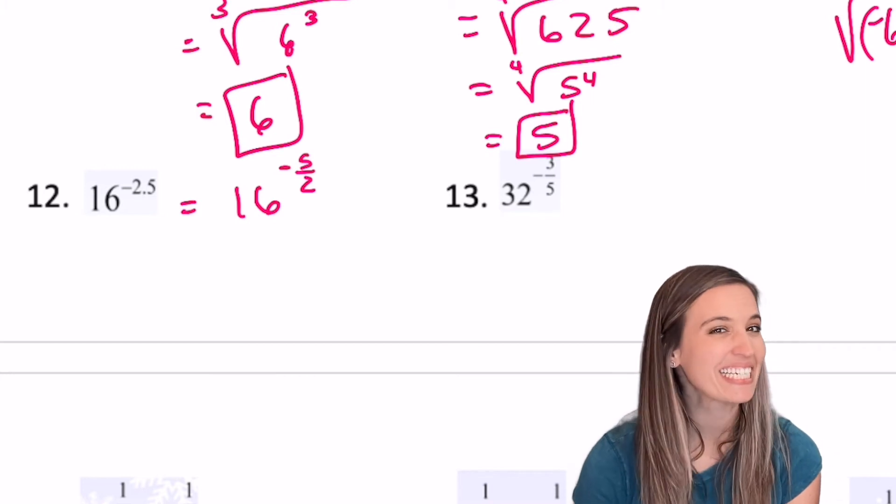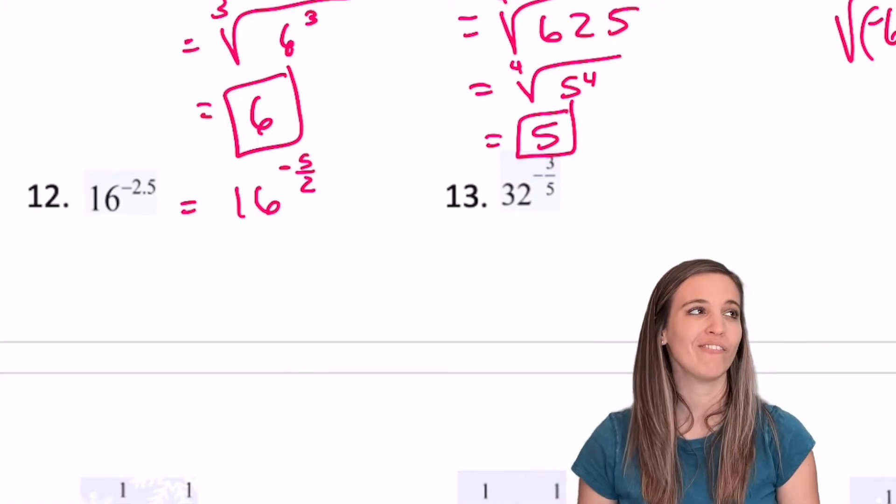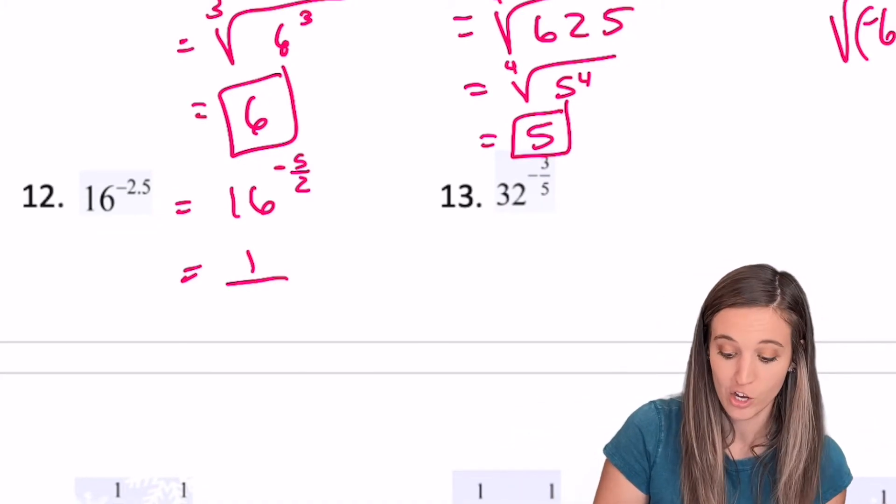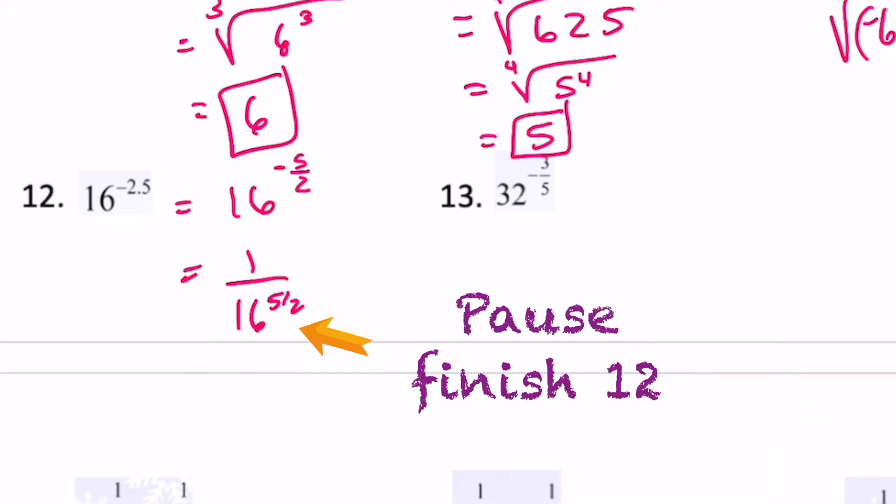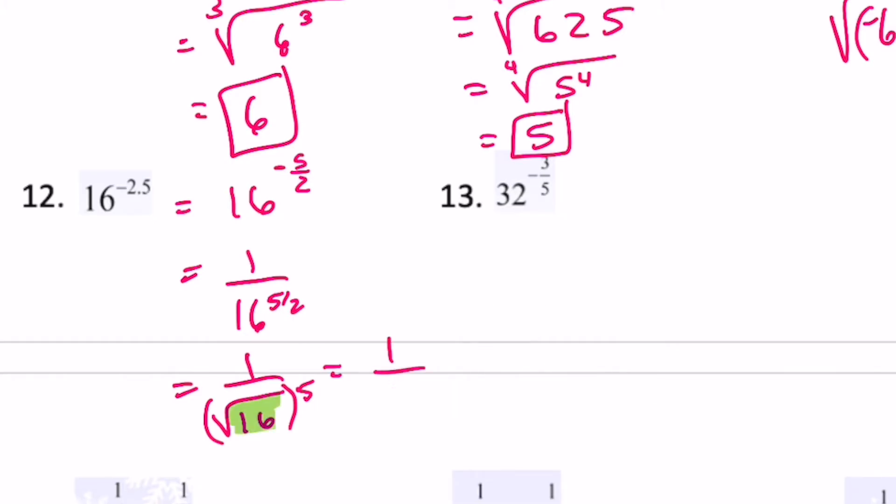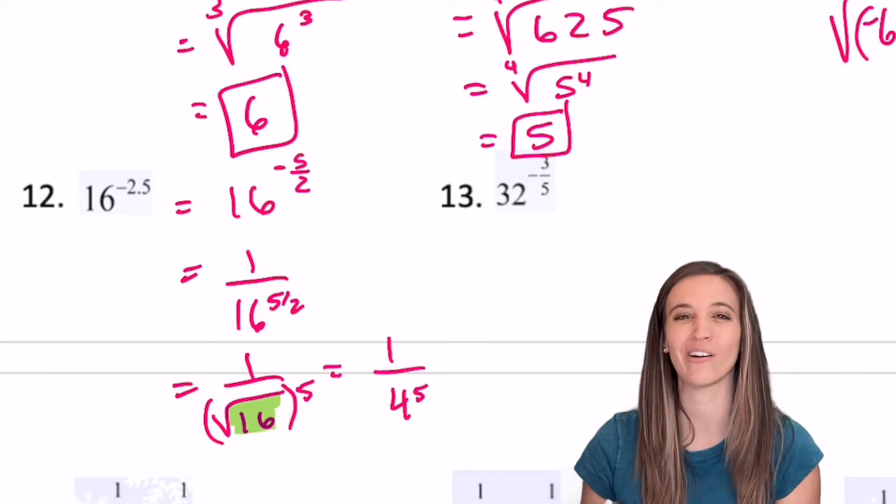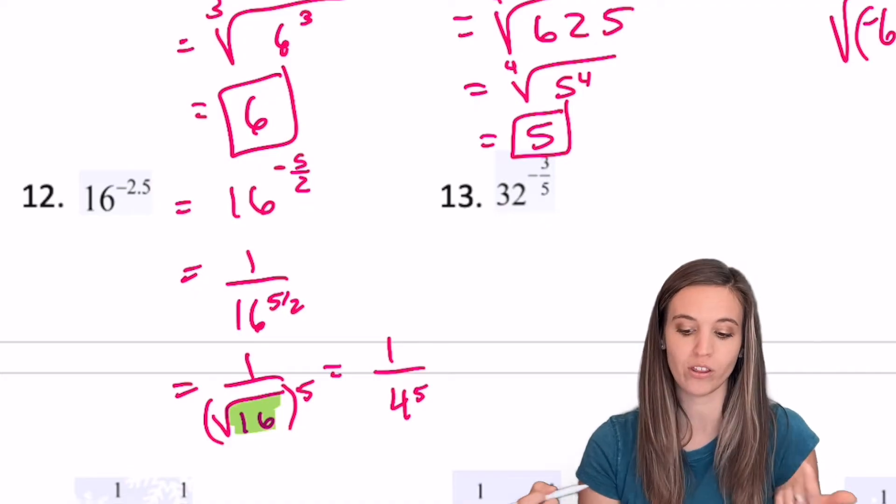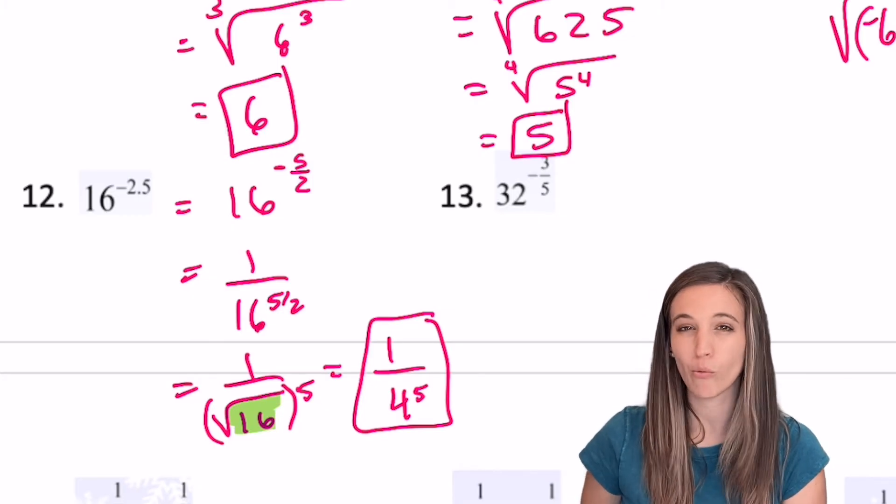All right, looking at this next one, I have 16 to the negative 2.5. I know negative 2.5 is just negative 5 halves. That way I can see that rational exponent. 16 to the negative 5 halves. It's negative. We can't mess around with that. So let's go ahead and move that to the denominator, put a 1 in the numerator to hold its place. So 1 divided by 16 to the 5 halves. Now we can convert that to a radical. See if you can do it. Okay, so power over root, it's going to be a square root this time to the 5th power. So I'm going to go ahead and write that as the square root of 16 all to that 5th power. So square root of 16 is just 4 and then 4 to the 5th power, I don't know that one by heart. So I'm just going to leave it as 1 divided by 4 to the 5th power.